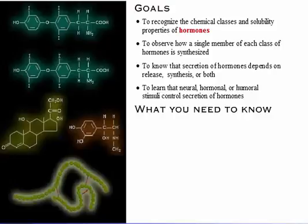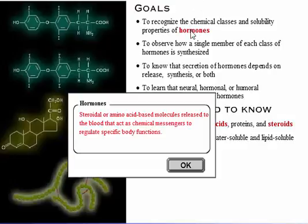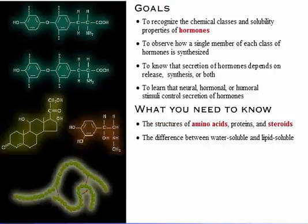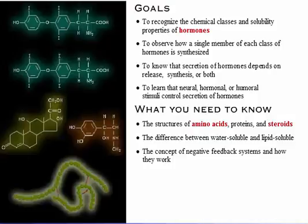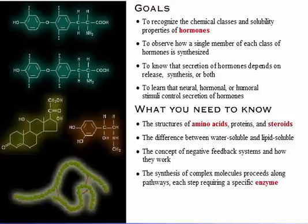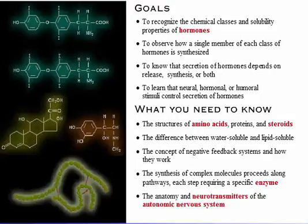Here's what you need to know: the structures of amino acids, proteins, and steroids; the difference between water-soluble and lipid-soluble; the concept of negative feedback systems and how they work; the synthesis of complex molecules proceeds along pathways, each step requiring a specific enzyme; and the anatomy and neurotransmitters of the autonomic nervous system.